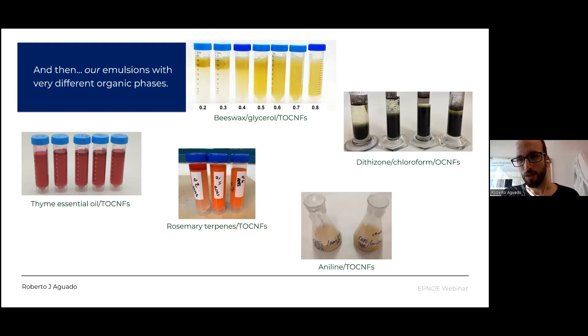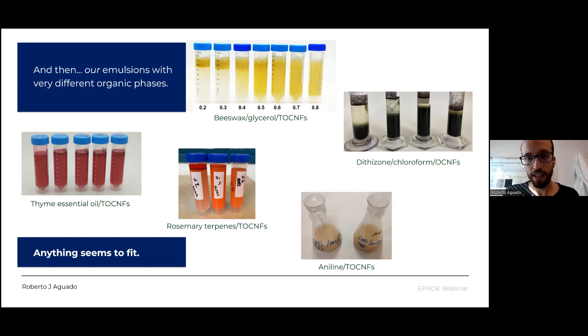And even things with permanent dipole such as chloroform, and something that excites me particularly, which is aniline. And this was really easy to stabilize. Yes, the density being aligned to that of water would surely help. But what if these primary amino groups of aniline are forming some ammonium carboxylate interactions, ionic interactions, with TEMPO oxidized nanocellulose? I don't know. Between the pKa of TEMPO oxidized nanocellulose and the pKb of aniline, that's a broad range of pH. So why not? And why was it so easy? The point is that with these nanofibers, anything seems to fit.